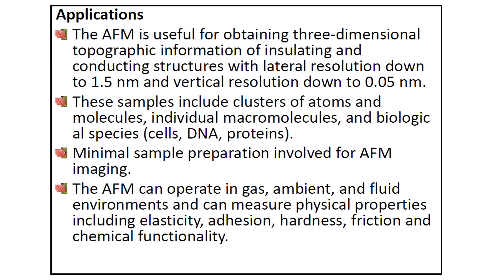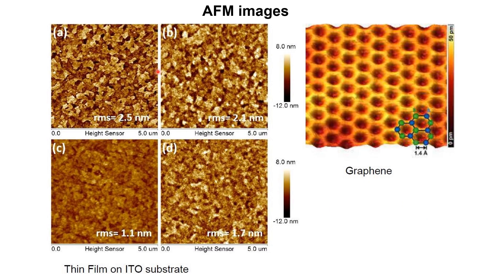The topography of the sample is displayed on a digital screen. AFM is useful for three-dimensional topographical information of both insulating and conducting structures — unlike some instruments limited to conducting samples only. Biological samples such as DNA and any other kind of sample can be scanned using AFM. No special sample preparation is needed and it can operate in ambient conditions. These are typical AFM images where the color scale shows particle sizes, and these particular images are from an ITO (indium tin oxide) substrate.